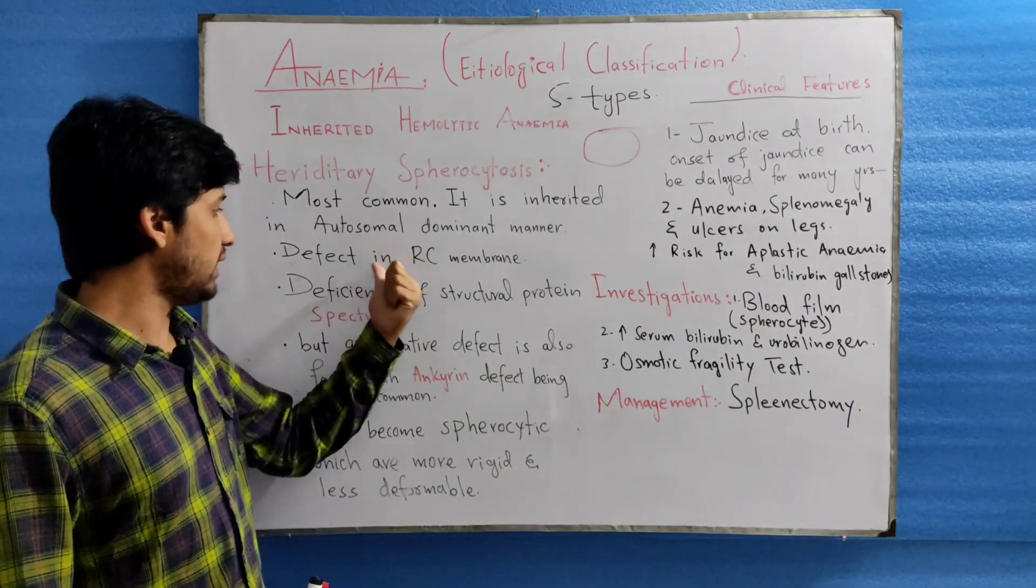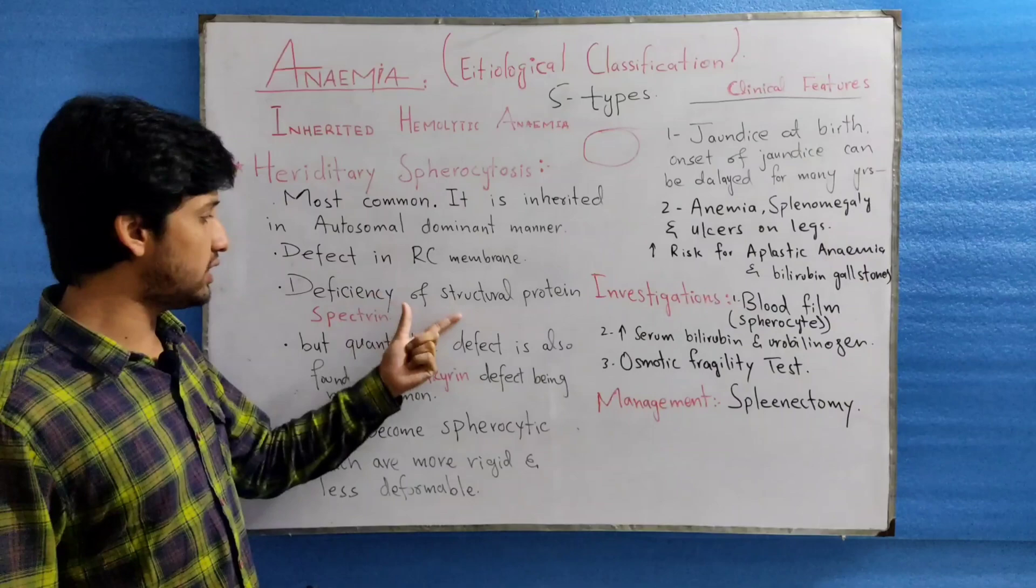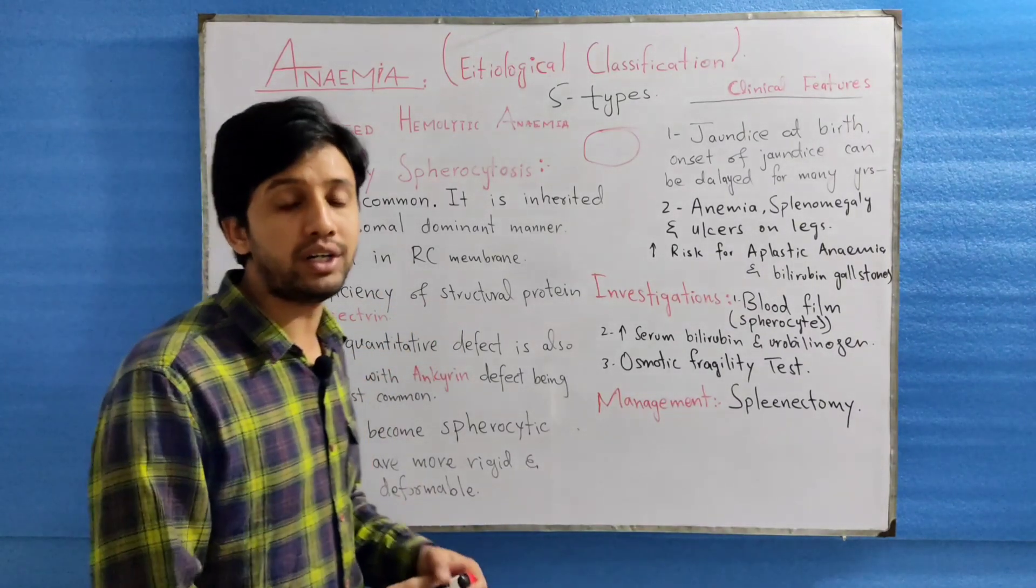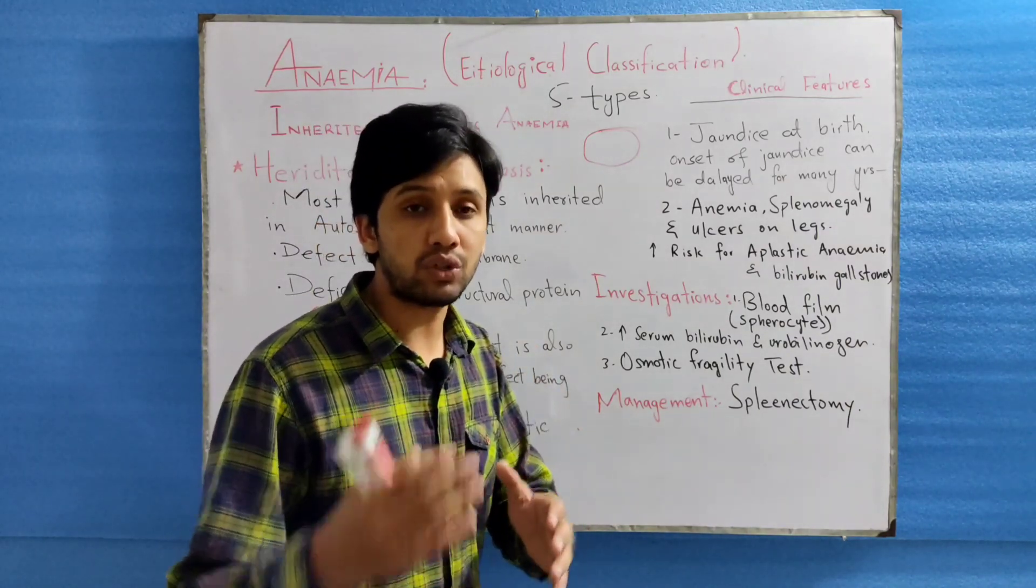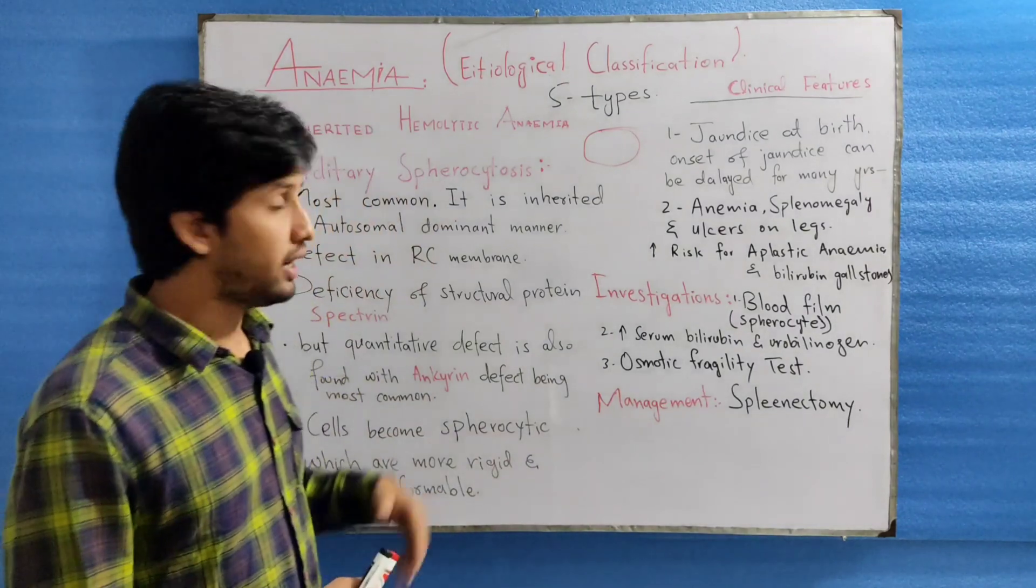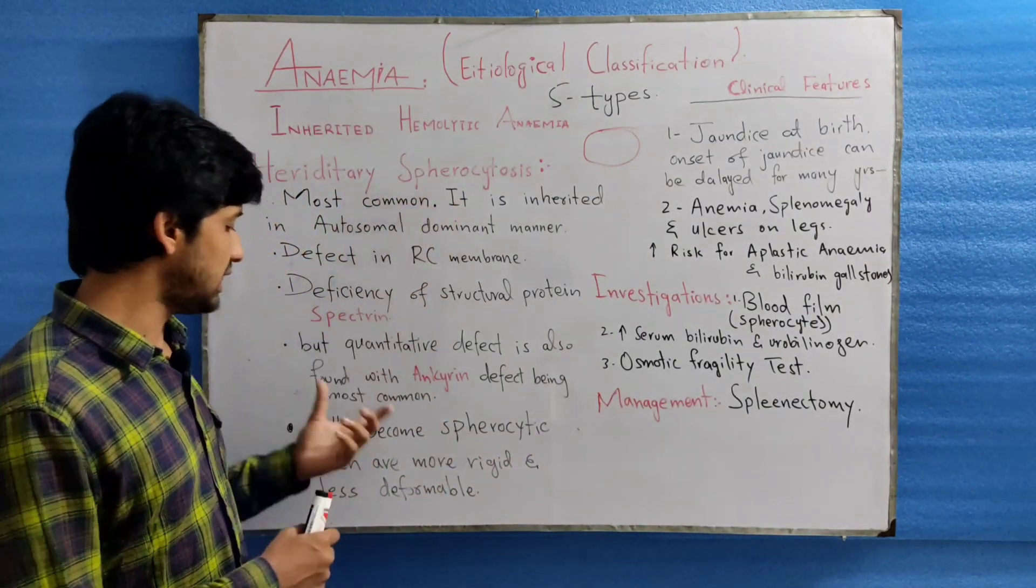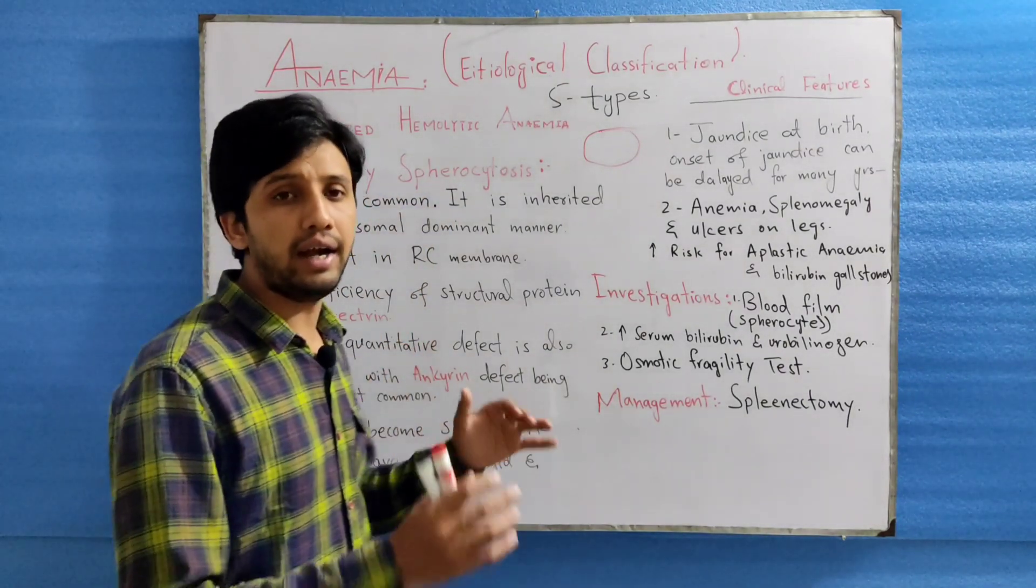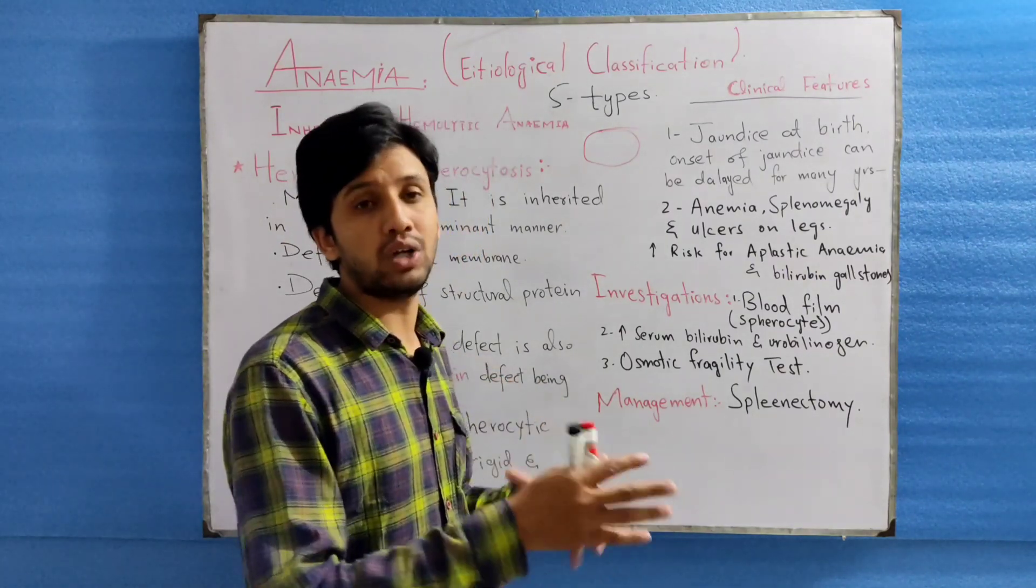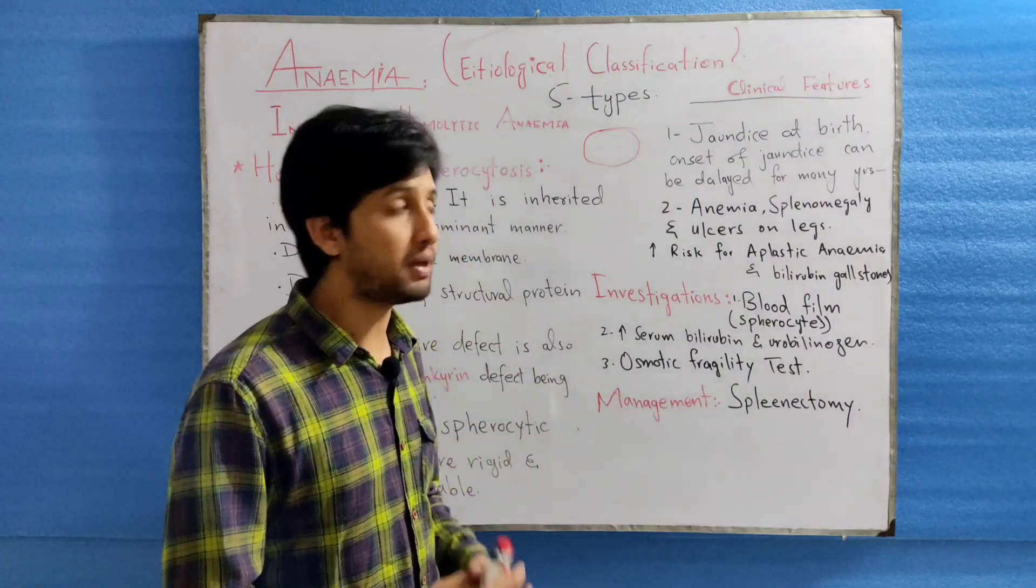As this is a defect in the red cell membrane, there is a deficiency of structural protein called spectrin, but there can be a quantitative defect in the protein which is most commonly called ankyrin or band 3. In hereditary spherocytosis, the cells become spherocytic and they are less deformable and they cannot pass through the microcirculation of the spleen.